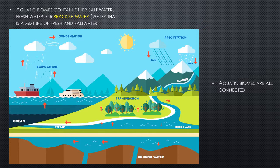fresh water, or what we call brackish water — a mixture of fresh and salt combined. Unlike terrestrial biomes, all water biomes are connected. If you remember the water cycle from high school, that means every water biome is connected to another, which is not true of our terrestrial biomes.